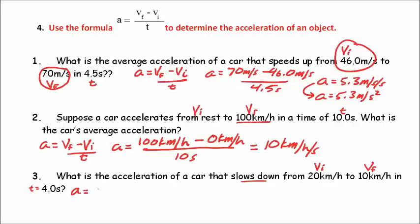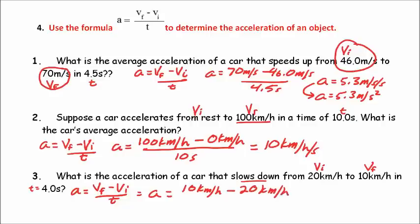Step one: write the equation — acceleration equals V sub f minus V sub i divided by time. Step two: plug in — acceleration equals 10 kilometers per hour minus 20 kilometers per hour, divided by 4.0 seconds.